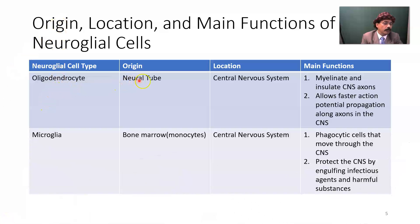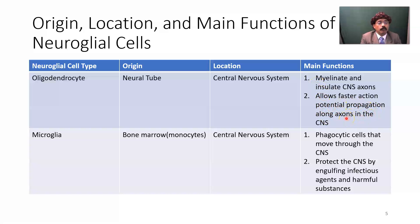Oligodendrocytes originate from the neural tube, are located in the central nervous system, myelinate and insulate CNS axons, and allow faster action potential propagation along axons. The action potential moves from one node of Ranvier to another. The velocity of impulse propagation is much greater in myelinated neurons than unmyelinated neurons, due to the myelin sheath and nodes of Ranvier — this is called saltatory movement of action potentials.